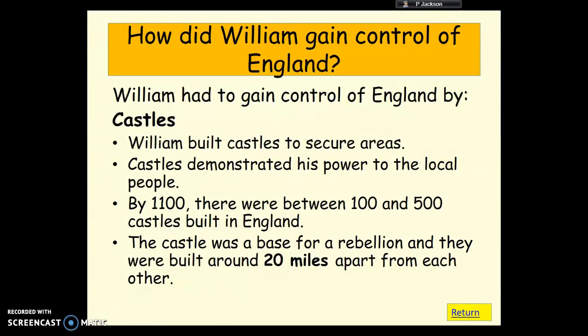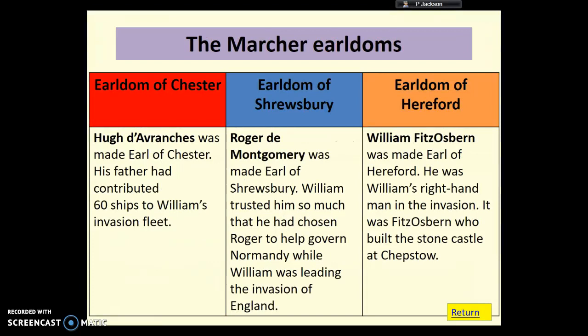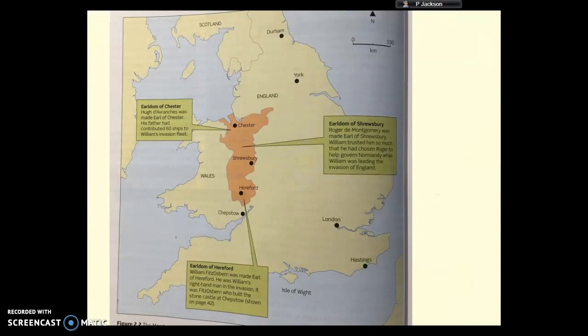The first castles were called Motte and Bailey castles. He also created new earldoms known as the Marcher earldoms, located along the Welsh borders — the Marches being the name for the borders at the time. Three new Marcher earldoms were created: Chester, Shrewsbury, and Hereford. Hugh de Avranches was in Chester, Roger de Montgomery in Shrewsbury, and William Fitz Osbern — one of William's closest supporters — held the earldom of Hereford. You can see a little map showing Chester, Shrewsbury, and Hereford. This was a really important area for William to control the Welsh Marches, keep the Welsh at bay, and keep England under control.